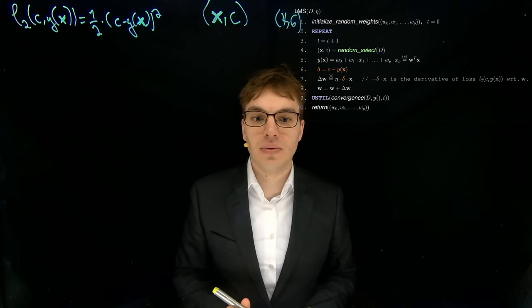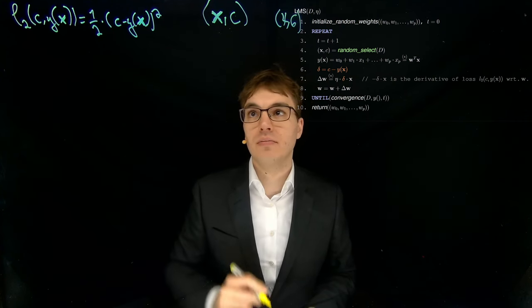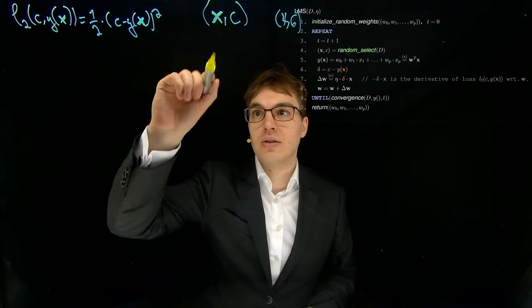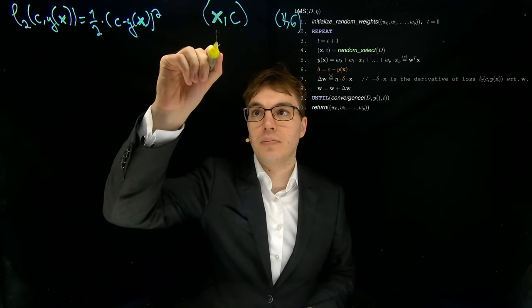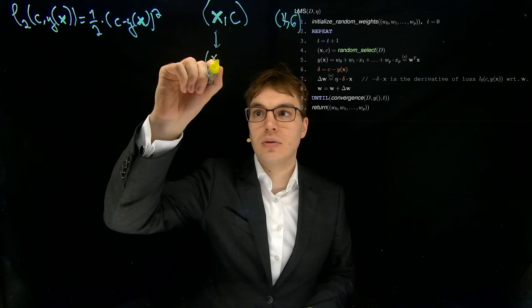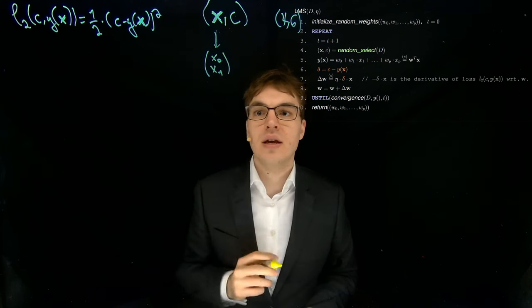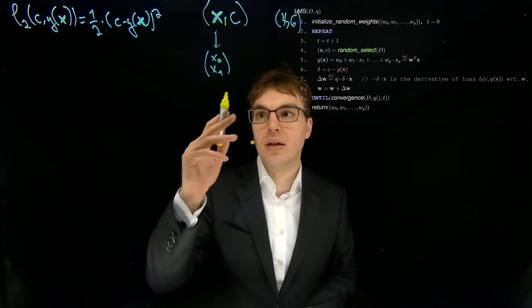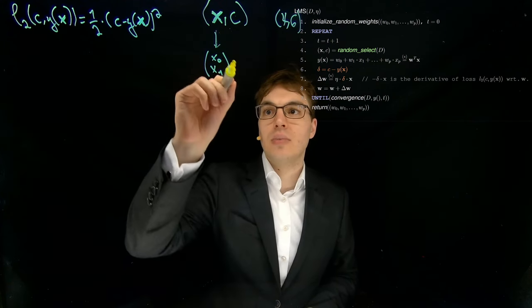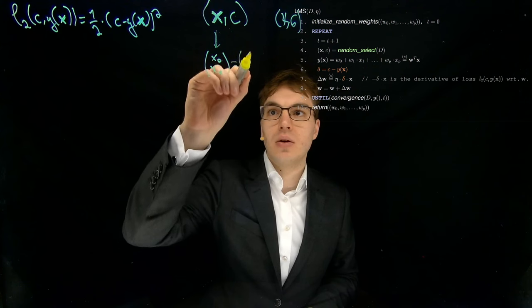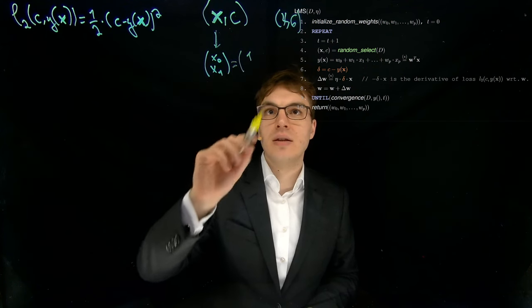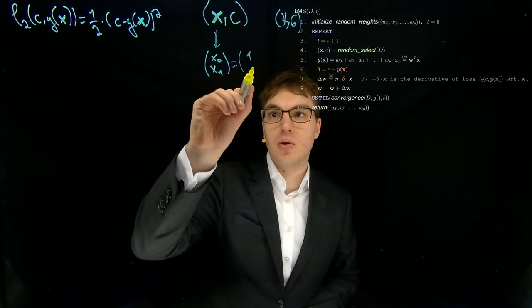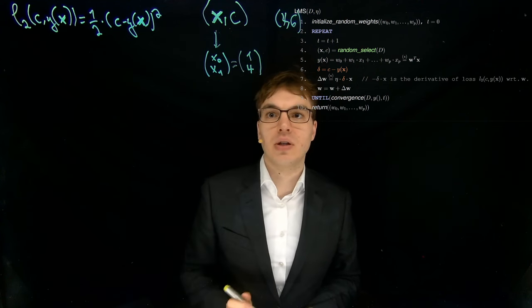And as you saw before, we have this X vector which consists of X0 and X1 in our case. And you saw that in order to fit our straight line equation, we need to make X0 equal 1 always. And X1 is our X coordinate from the point. This is really important at this point here.